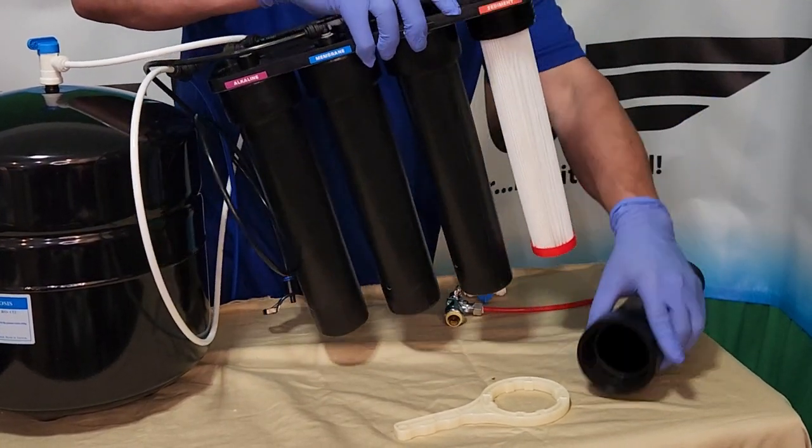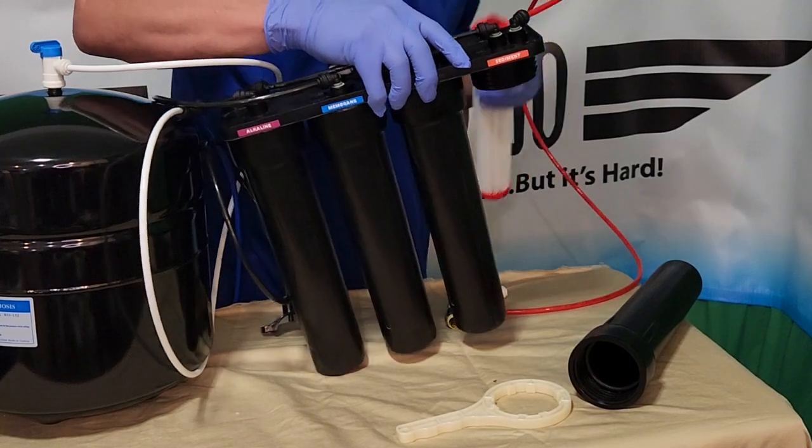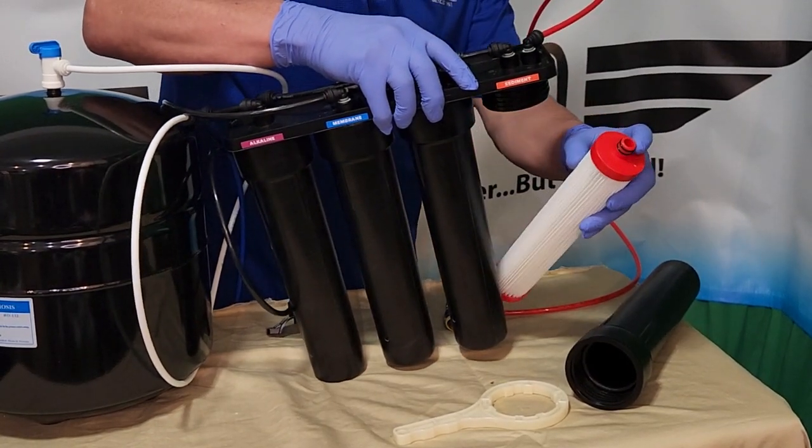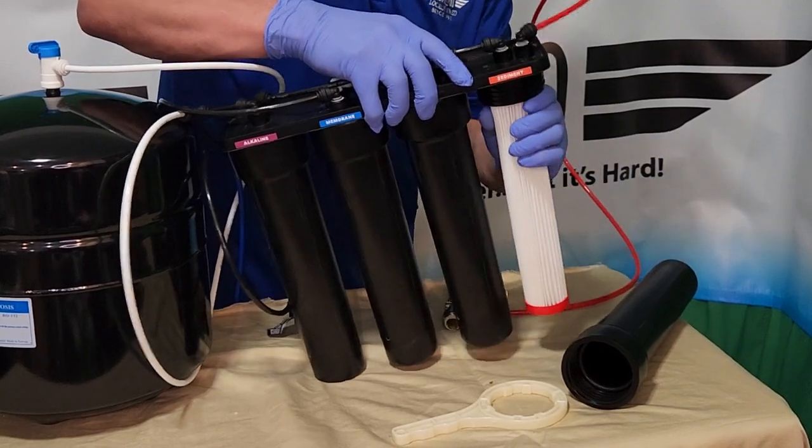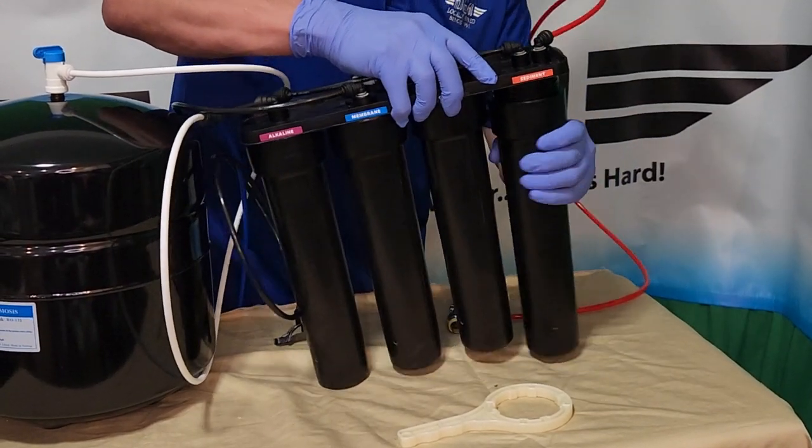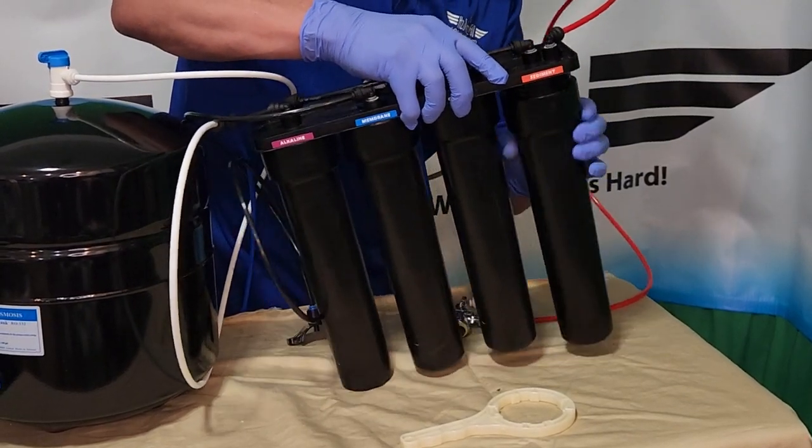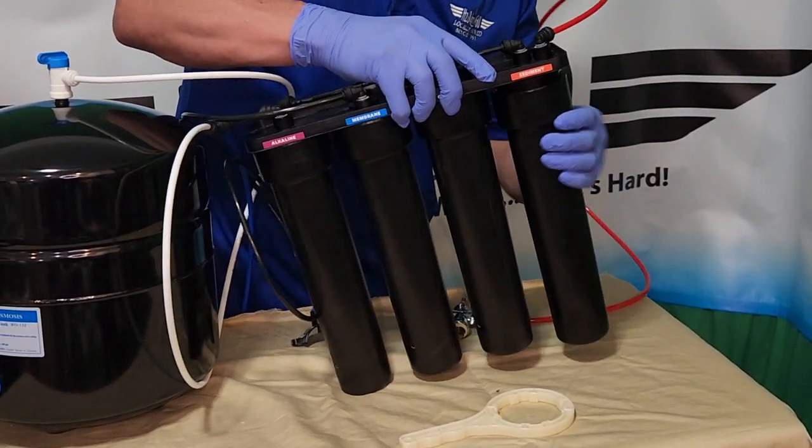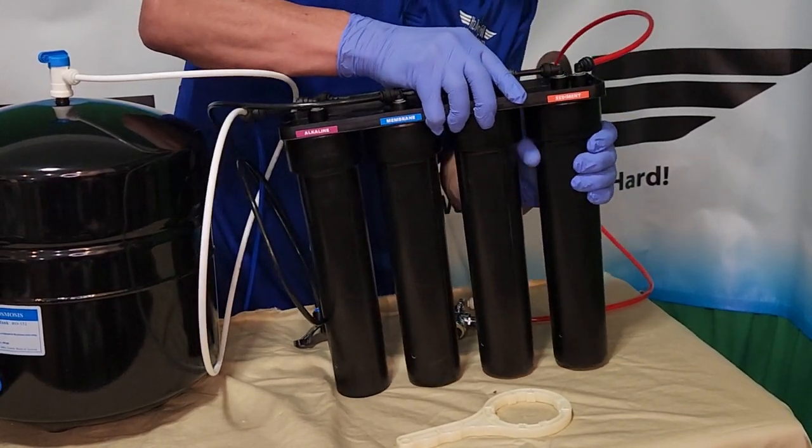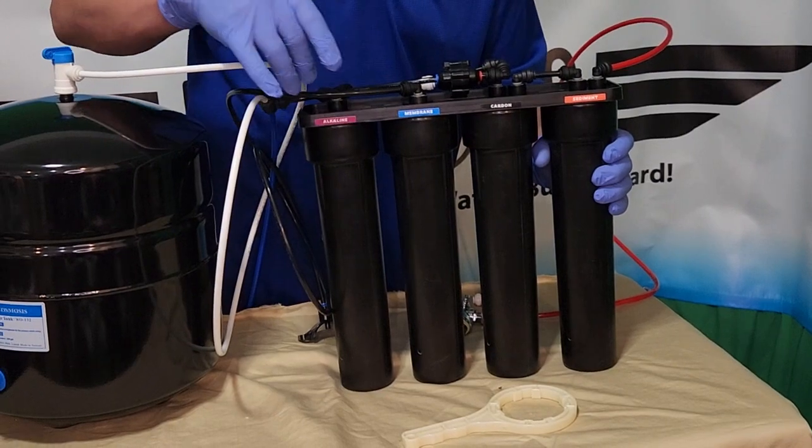Take out the old one. Get you a new one. Notice the O-rings. You want to get those right up in there. Screw it back. You just hand tighten them. You want to repeat that for all the canisters you're changing.